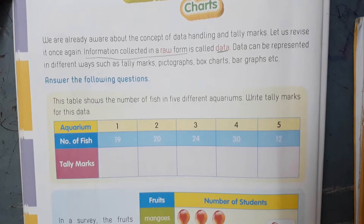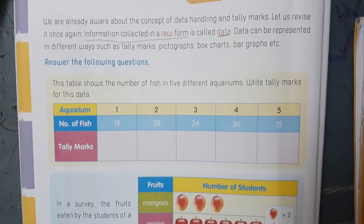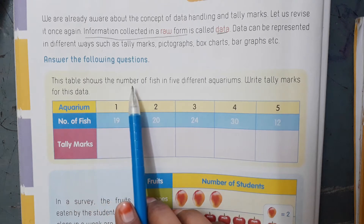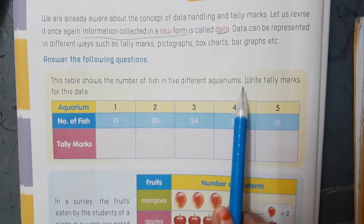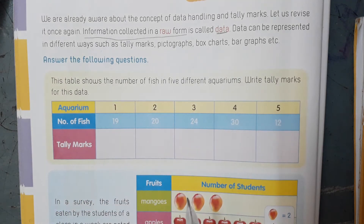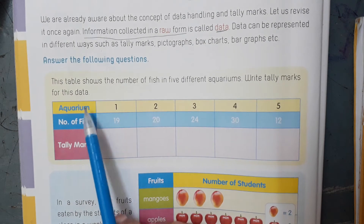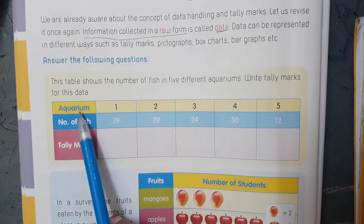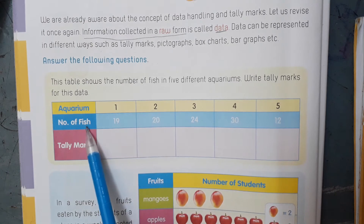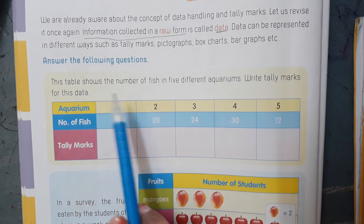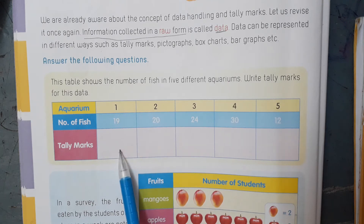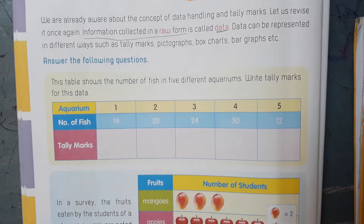Here is an example. Answer the following questions. This table shows the number of fish in 5 different aquariums. Write tally marks for this data. So here we have aquarium and number of fish columns — aquariums 1 through 5 with the number of fish in each aquarium given. We are going to write tally marks. What is a tally mark?